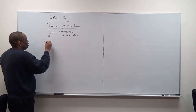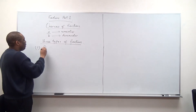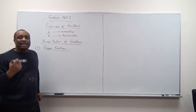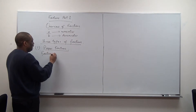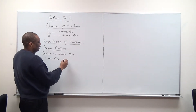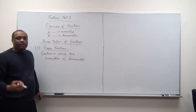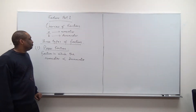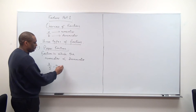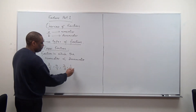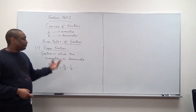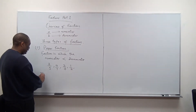We are going to look at three types of fractions. The first one is what we call the proper fraction. A proper fraction is a fraction in which the numerator is less than the denominator. Examples: you can have three over five, four over seven, two over three, one over two — in each case the numerator is less than the denominator.